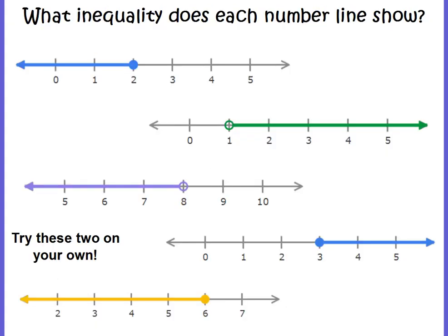So what inequality does each number line show? This is how we read the number lines. The first thing you want to do is see where your circle is — the circle is at the 2. The x line is going to the right, which means x is smaller than the 2, so the alligator is going to eat the 2. Now look at your circle — is it empty or filled in? Our circle is filled in, so 2 is included in the solution set. So our inequality would be x is less than or equal to 2.